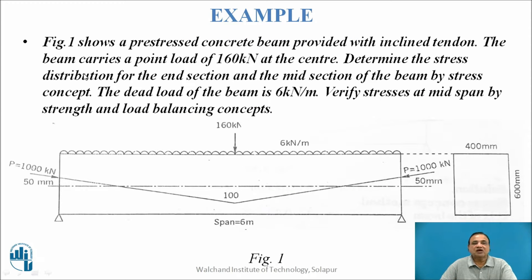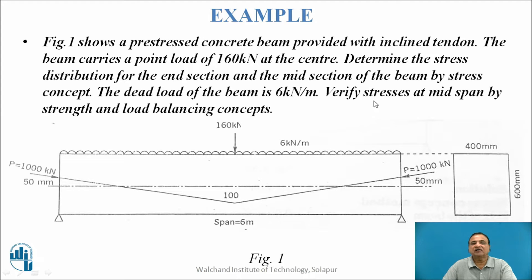Figure 1 shows a pre-stressed concrete beam provided with an inclined tendon. The beam carries a point load of 160 kN at the center. Determine the stress distribution for the end section and mid-span section by stress concept. The dead load of the beam is 6 kN per meter, and verify stresses at mid-span by strength and load balancing concepts.